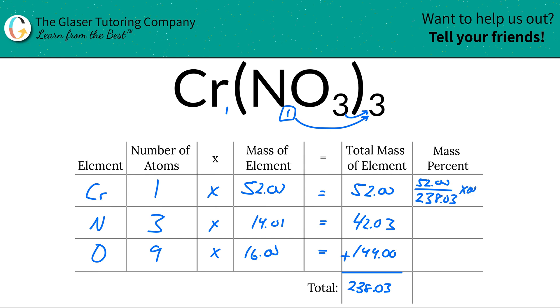And then take that and multiply it by 100. This is a simple percent calculation, part of a whole times 100. So this is going to be 21.85%, roughly.